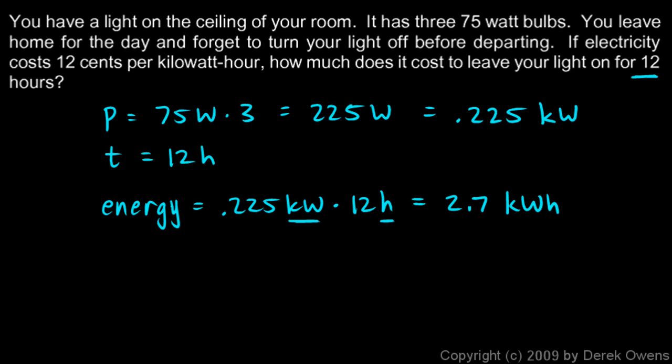2.7 kilowatt hours, and then we can calculate the cost from that. 2.7 kilowatt hours times 12 cents per kilowatt hour, and these will cancel out the kilowatt hours.